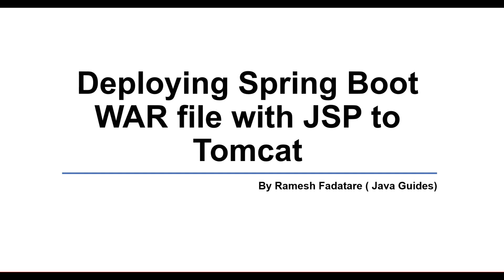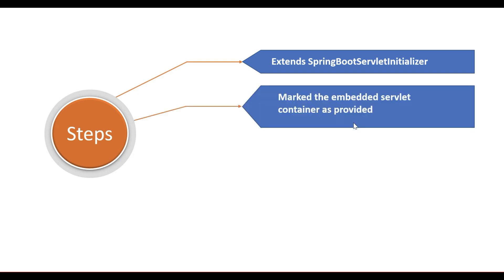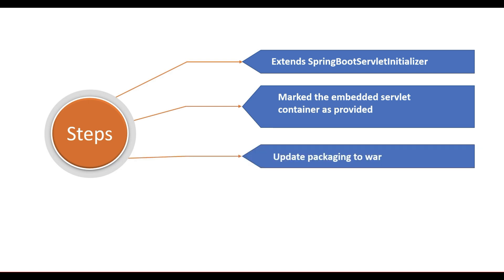It's pretty simple — we need to implement three steps. First, we need to extend the SpringBootServletInitializer class and override the configure method. Second, we need to mark the embedded servlet container as provided in the pom.xml. Third, we need to update the packaging type from JAR to WAR in the pom.xml. These are the three steps we need to implement in order to create a Spring Boot WAR file and deploy it in an external Tomcat server.